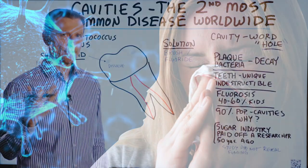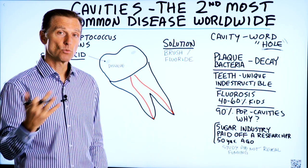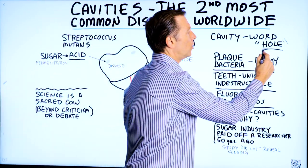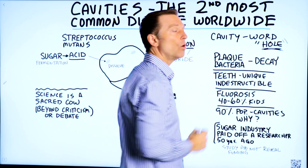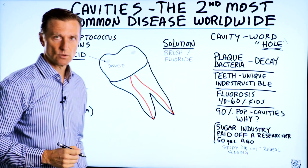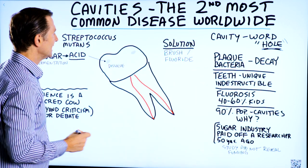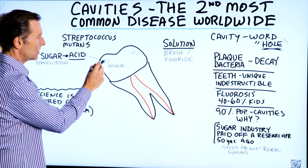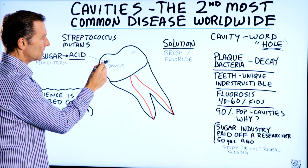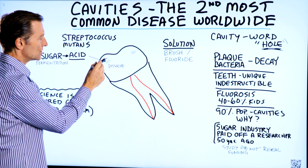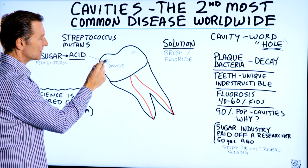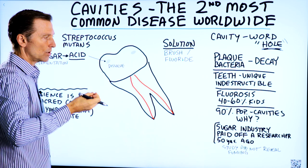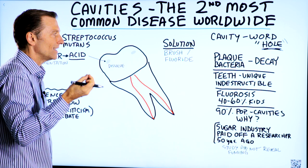What is a cavity? The root word for cavity means hole — there's a hole in your tooth. You're getting dental decay. In other words, the bone is dissolving and breaking down to the point where there's a hole in it.